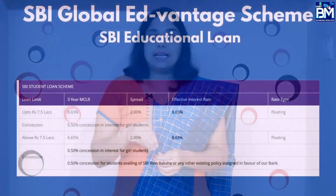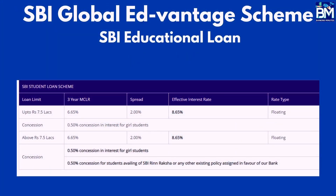Currently, the interest rate for this loan is 8.65%. There is a concession of 0.5% for girl students. Additionally, if you have an SBI insurance policy — such as the SBI Rinn Raksha scheme or a life insurance policy — the student who holds it gets a further concession of 0.5% on the interest rate.